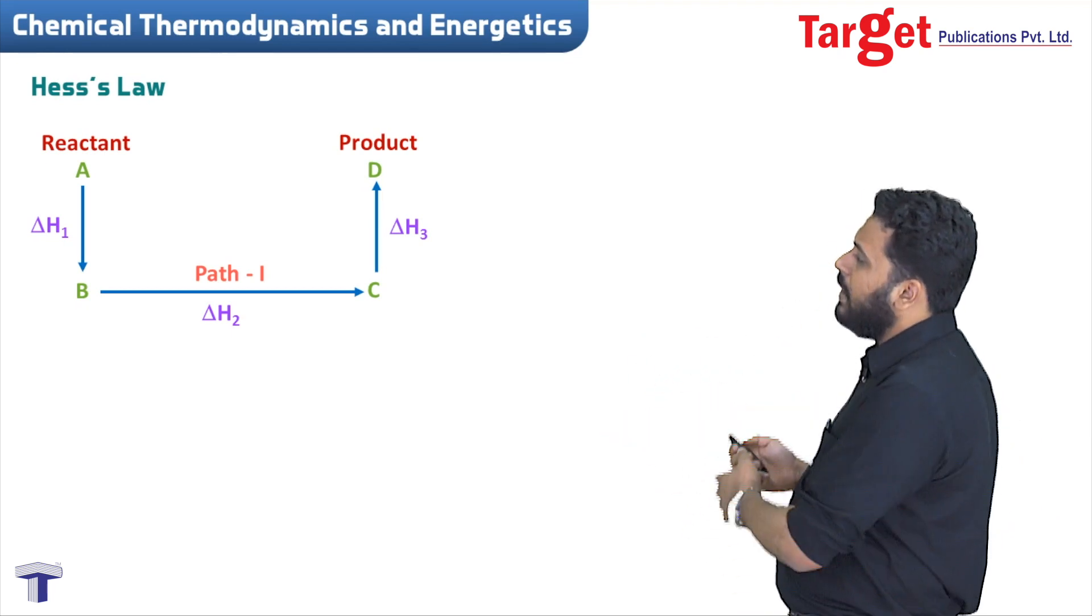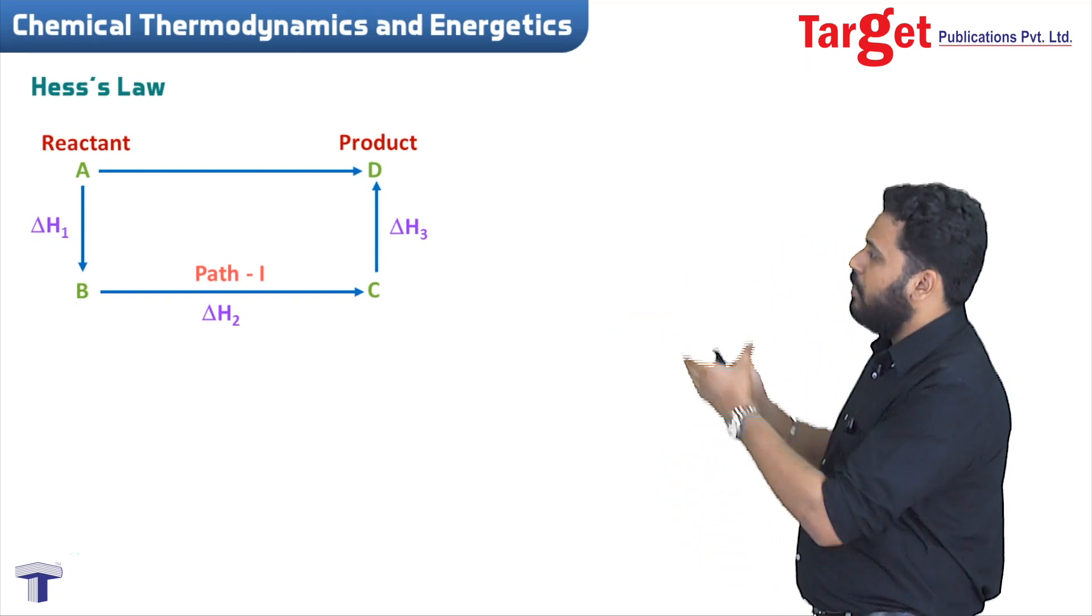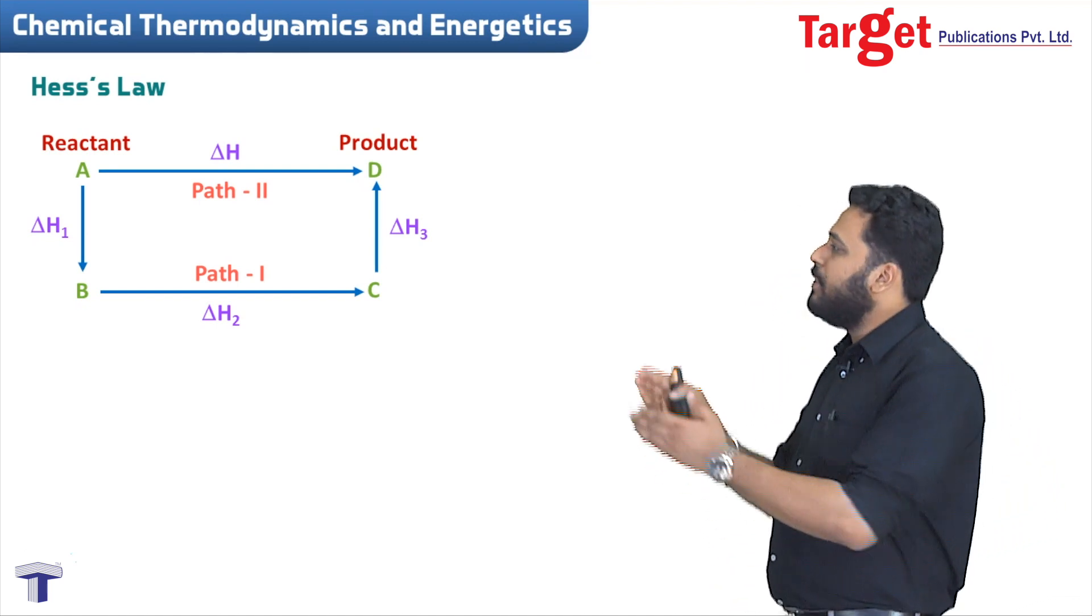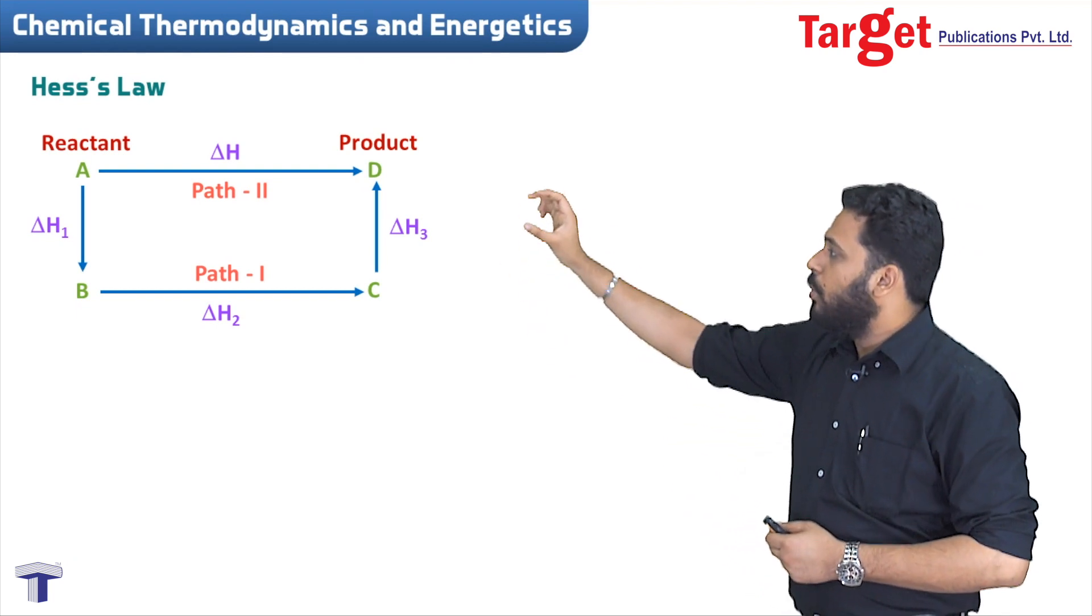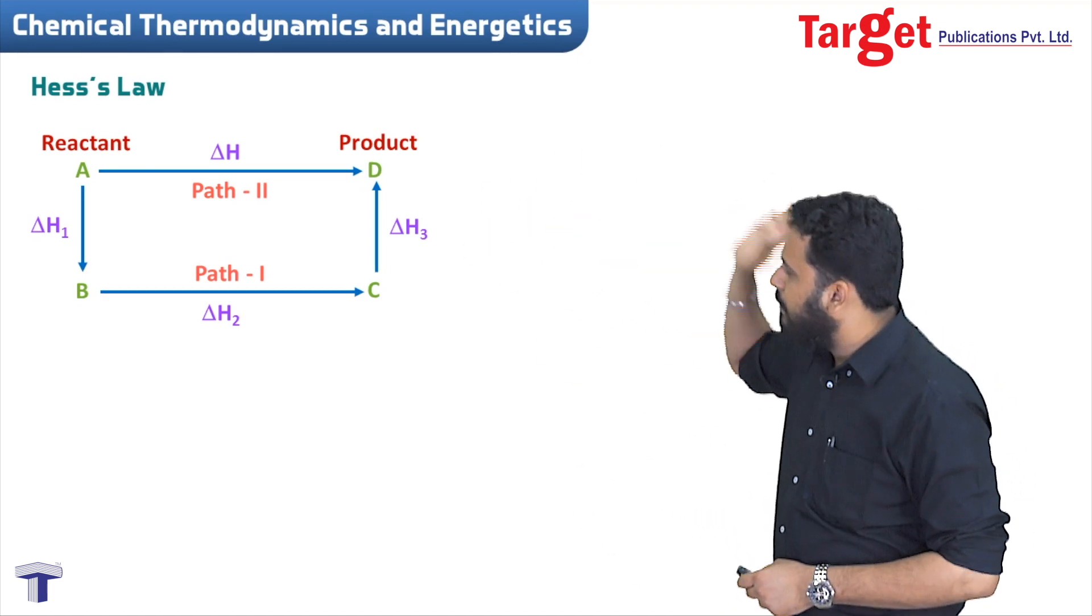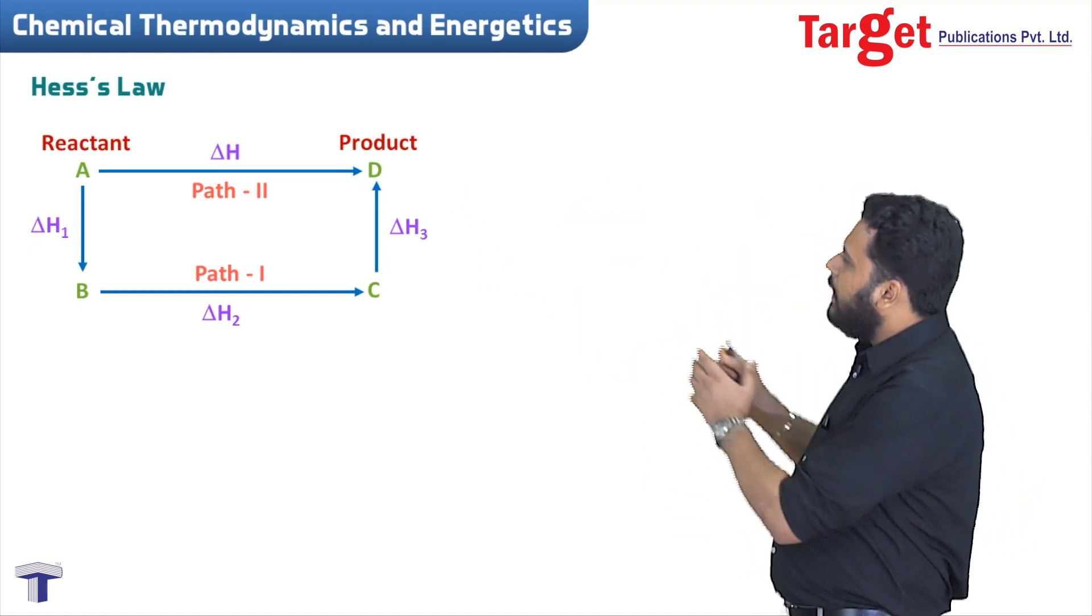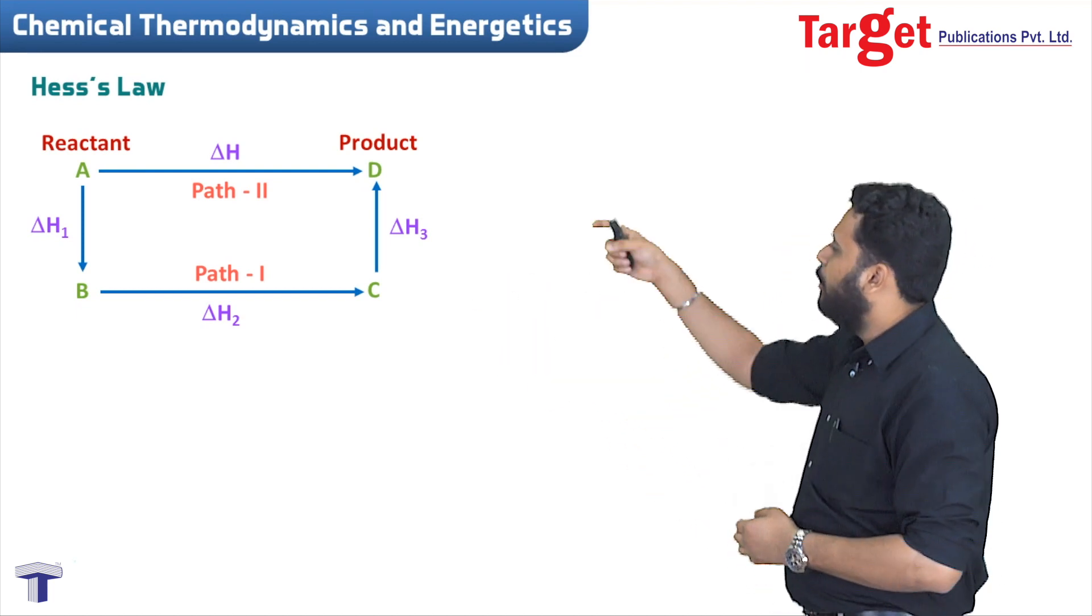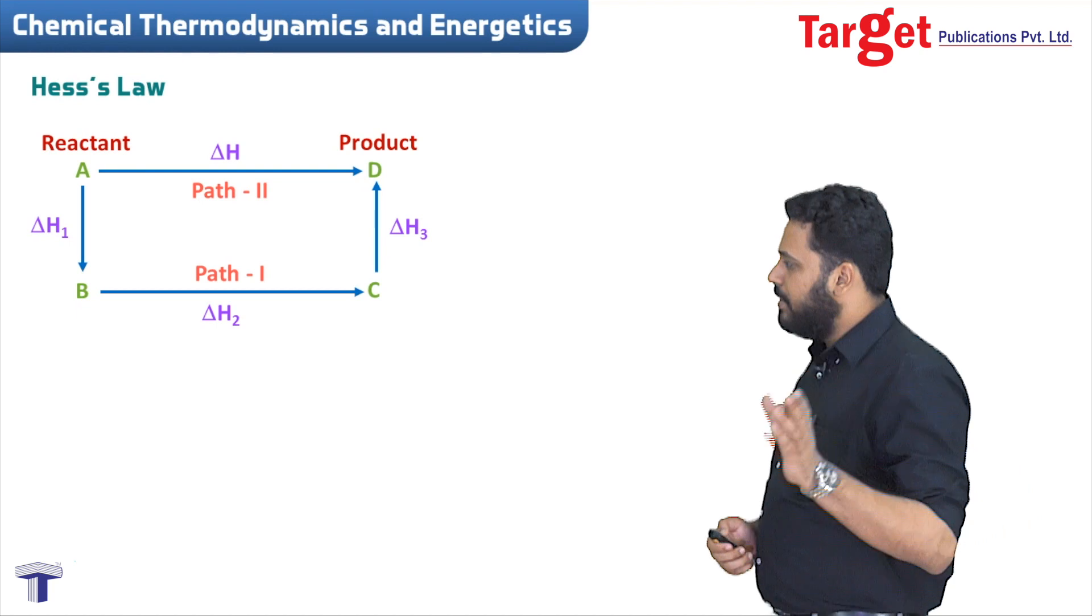This same reaction can also happen directly. A can directly give you D. If this happens, this process also has its own delta H value. Let's call this Path 2 with enthalpy change delta H. So A is converting to D either directly or through steps.